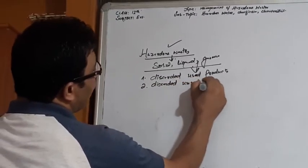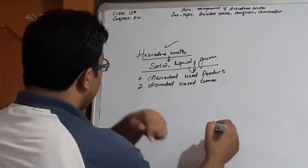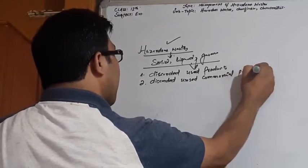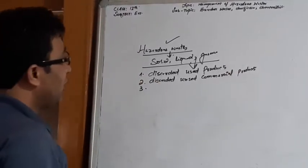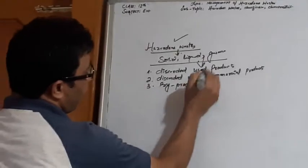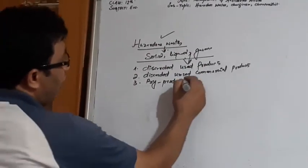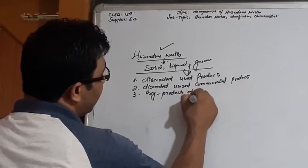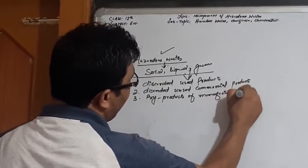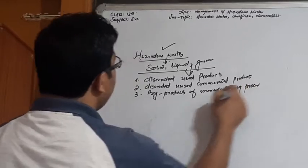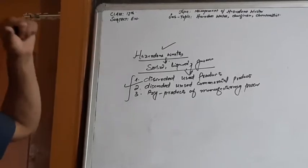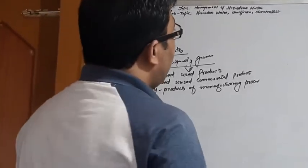Unused commercial products, by-products of manufacturing processes. These three categories of solid wastes are included under the hazardous waste.